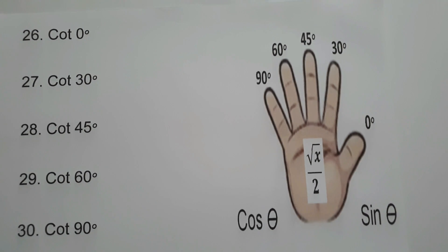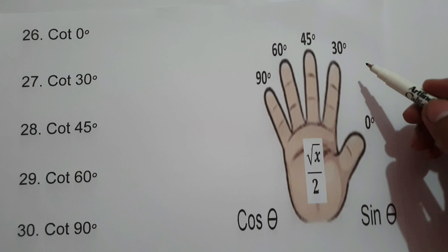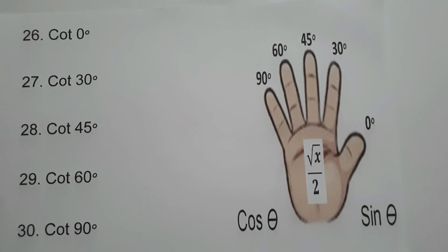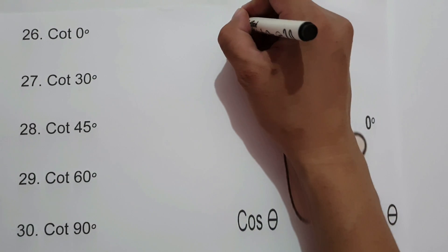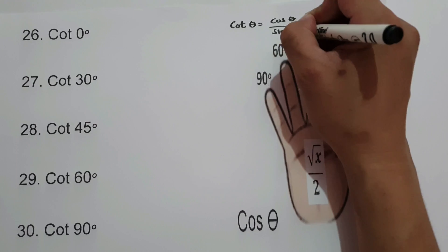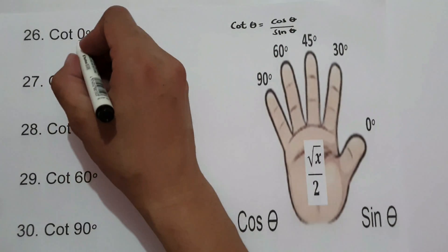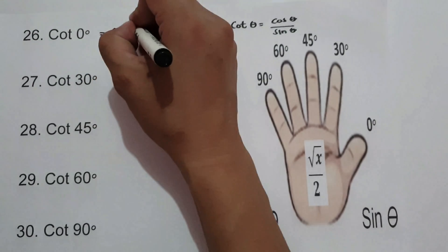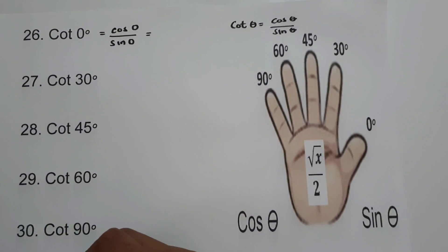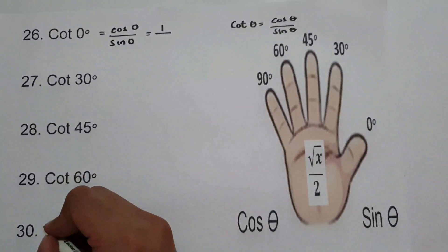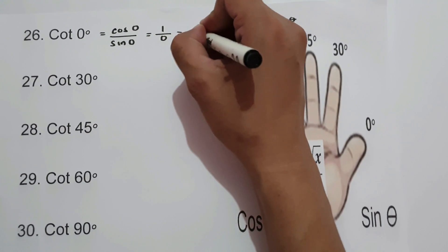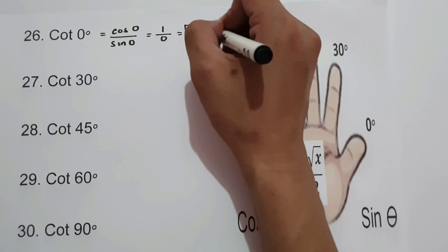On the last set of examples, we are going to find the value of cotangent 0°, 30°, 45°, 60°, and 90°. We know that cotangent theta equals cosine theta over sine theta. For cotangent 0°, that is cosine 0° over sine 0°, which is 1 over 0 — undefined. Cotangent 0° is undefined.